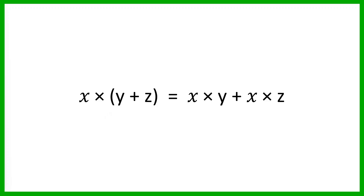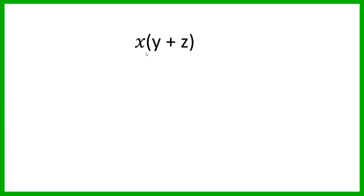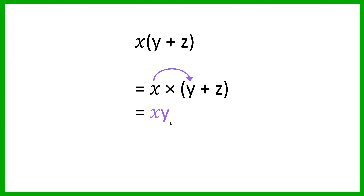So let's have a look at how we would use the distributive property in simplifying an algebraic expression. If you're given an expression like x times y plus z, you're going to multiply the x by the y, giving you xy, and then multiply the x by the z as well, giving you xz. You add them because the z was positive — positive times positive gives positive xz.